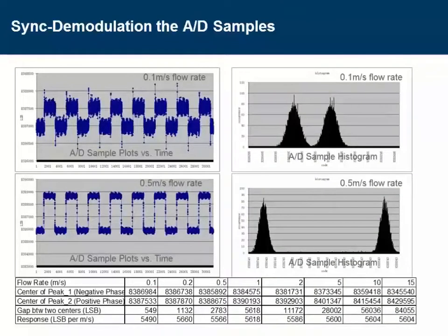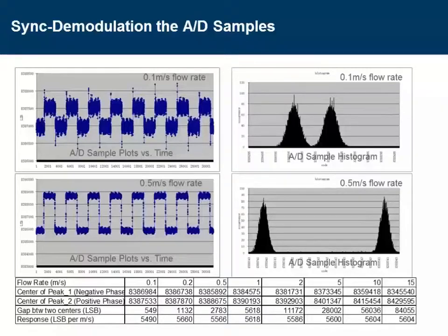The plot here shows an example of how the synchronous demodulation is working for two different flow rates. We can see that the ADC samples are switching up and down — the rectangle waveform versus time is due to the alternating sensor excitation, creating positive phase and negative phase. When making a histogram of this, the ADC samples become two peaks. From the separation of these two peaks, one is able to calculate the flow rate. For example, the peak separation at 0.5 meters per second is about five times the separation at 0.1 meters per second. For the specific gain and sensitivity in this configuration, the flow rate is about 5,600 LSB per meter per second. The response on the range from 0.1 to 15 meters per second is quite linear.